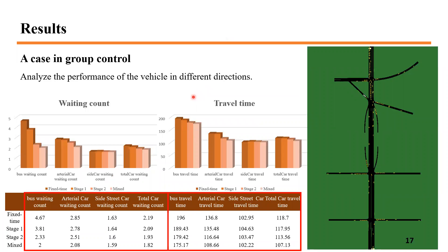Comparing performance between different vehicle types, the goal of signal priority is to reduce bus delay, and buses show the most obvious improvement. Because the bus route largely coincides with the arterial, arterial cars also benefit with a small reduction in travel time and waiting time. With the phase-time compensation discussed earlier, signal settings continue to adjust even after the bus passes the intersection, so side-street cars are not subject to greater impacts and even gain a small benefit in the two cycles after TSP control.